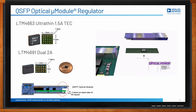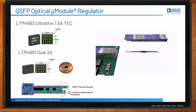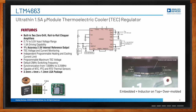Tell me about the LTM4663. The LTM4663 is a complete 1.5 amp micromodule thermoelectric coupler regulator in a tiny 3.5 mm by 4 mm package with a height of 1.3 millimeters in an LGA package. It operates over an input voltage range of 2.7 volts to 5.5 volts, supporting 1.5 amp continuous sync or source current capability. Only input and output capacitors are needed externally — the package includes the TEC controller, linear power stage, switching regulator, inductor, and all supporting components inside.